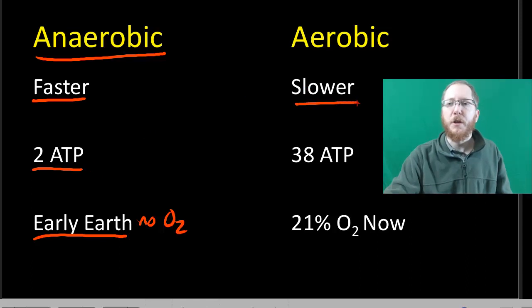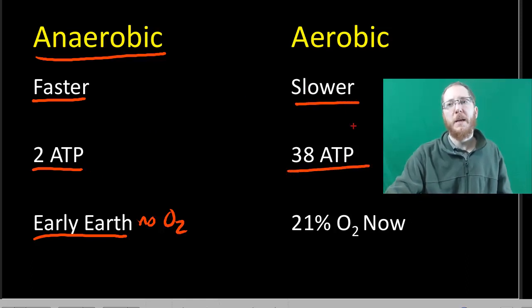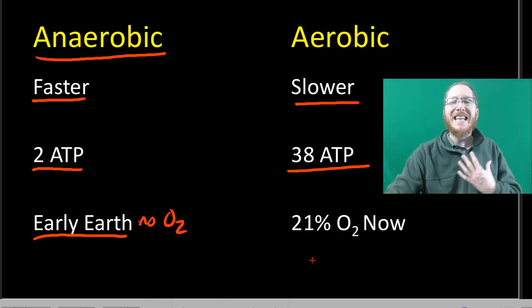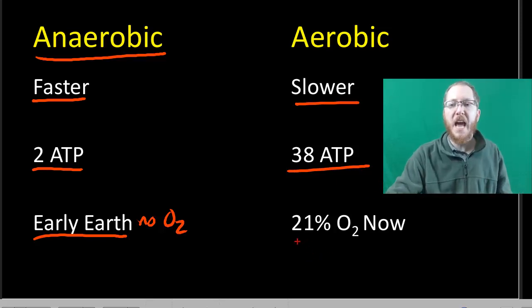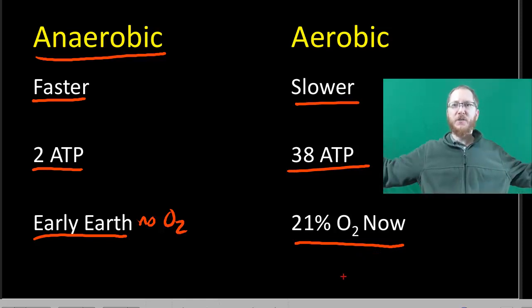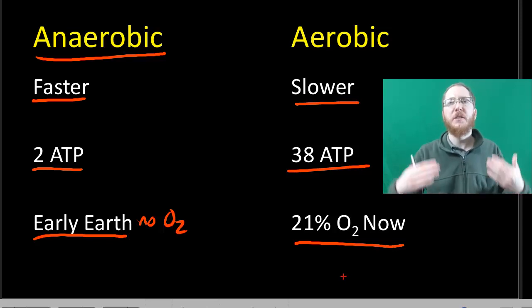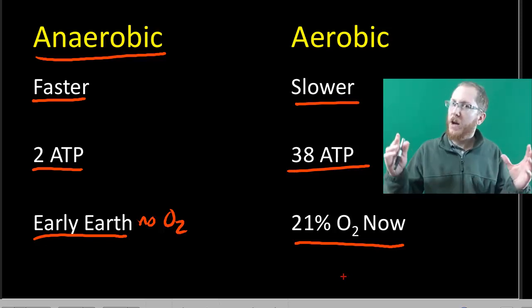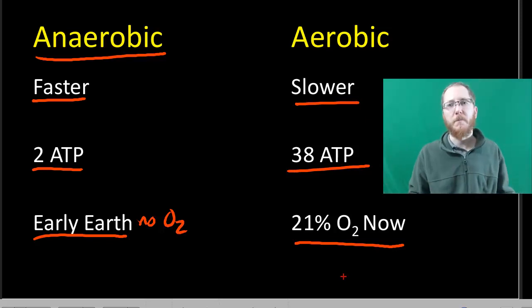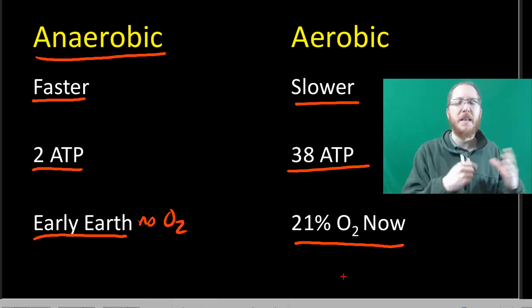Aerobic respiration is slower, but it produces way more ATP, 19 times roughly more ATP. Right now, it's really good because we have an atmosphere that's about 21% oxygen. If you're living in today's world, it's a great thing to do because oxygen is plentiful. If we were talking 3 billion years ago, completely different story. It wouldn't have been oxygen. You'd have had to have been anaerobic.